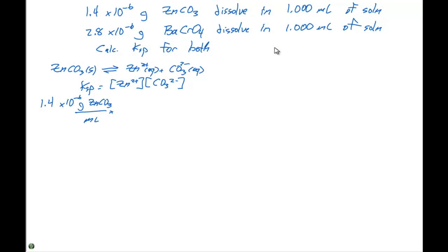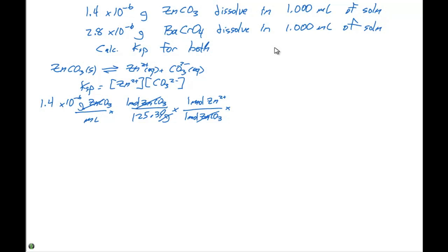We know that one mole of zinc carbonate is 125.39 grams — we can get that by looking at the periodic table. We also know that for every one mole of zinc carbonate that dissolves, we're going to get one mole of zinc two plus in solution. We can cancel out grams and cancel out moles of zinc carbonate, leaving moles of zinc two plus. We also need to convert to liters using the milliliter-to-liter conversion. This gives us 1.1 times 10 to the minus 5 molar.